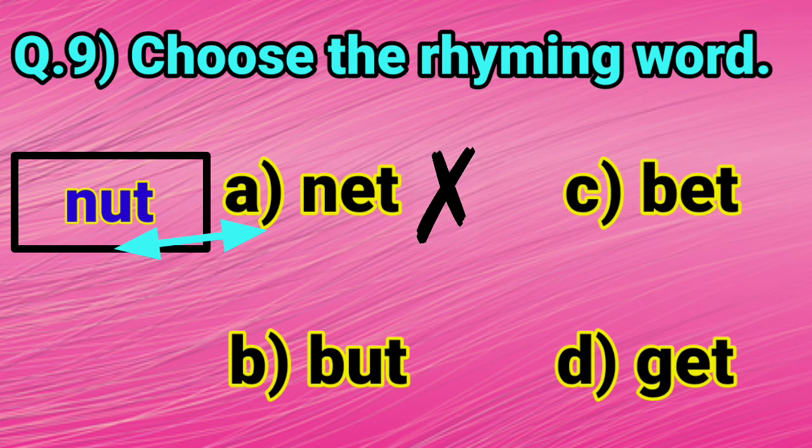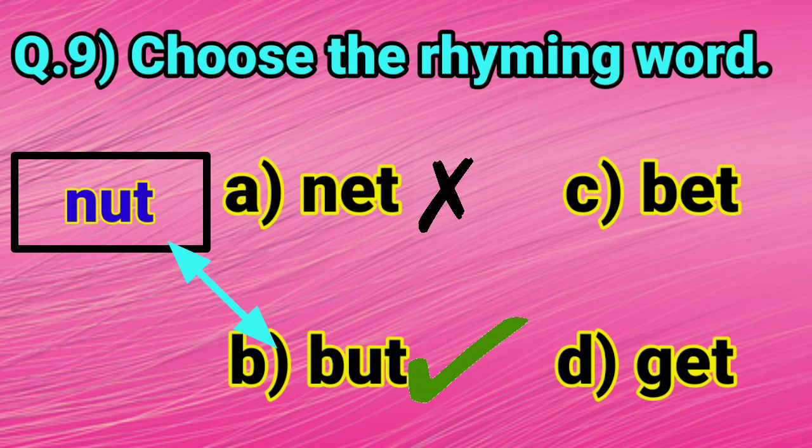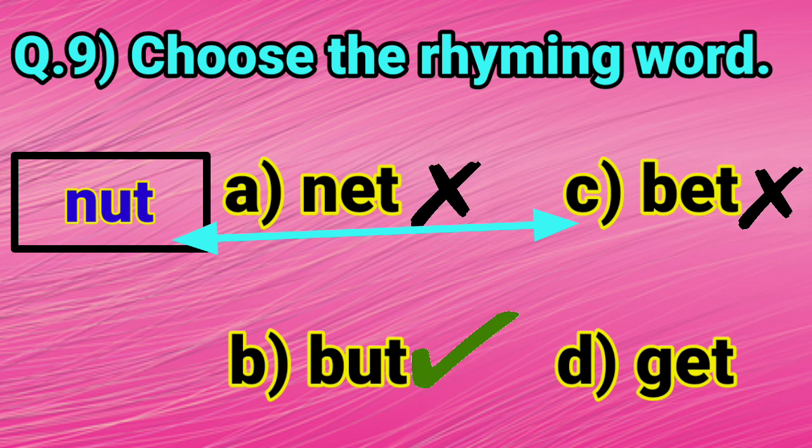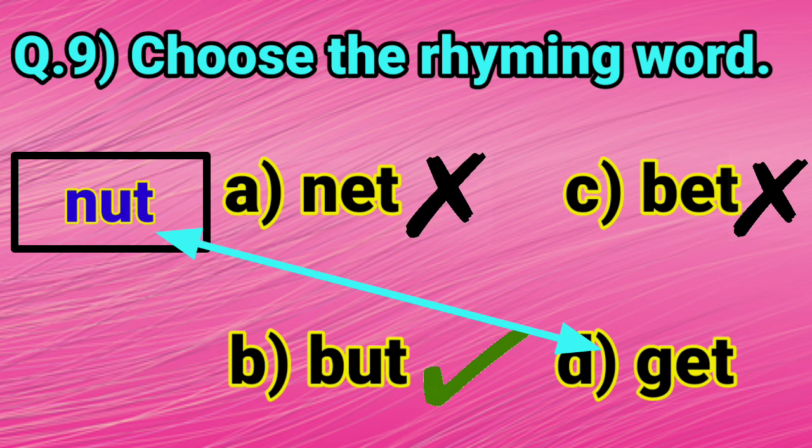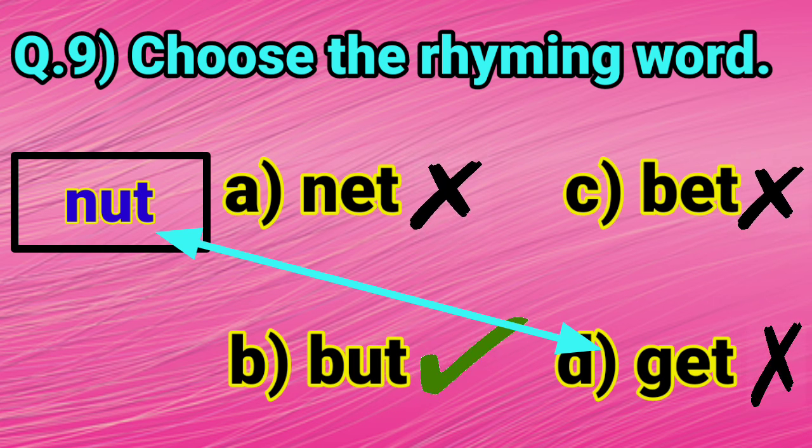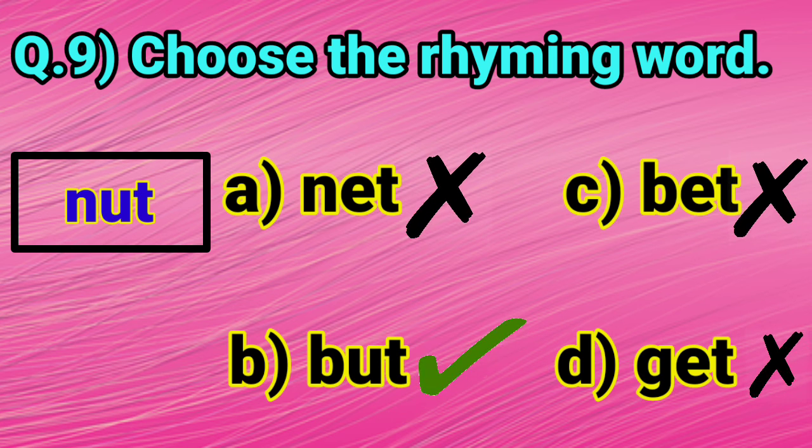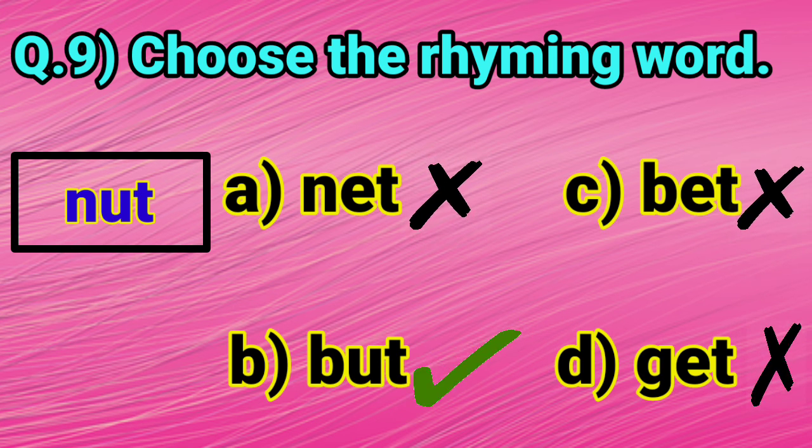Option A, nut, net. Not rhyming. Option B, nut, but. End with the same sound. So, rhyming. Option C, nut, bet. Again, not rhyming. And the last option D, nut, get. This is also not rhyming. So, the correct answer is option B, but.